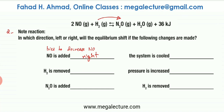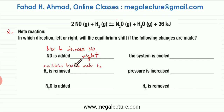The next part is that H2 is being removed. The equilibrium is going to do the opposite — it will try to make more H2. The way more H2 could be produced is if the backward reaction is favored. So the equilibrium would shift to the left-hand side.